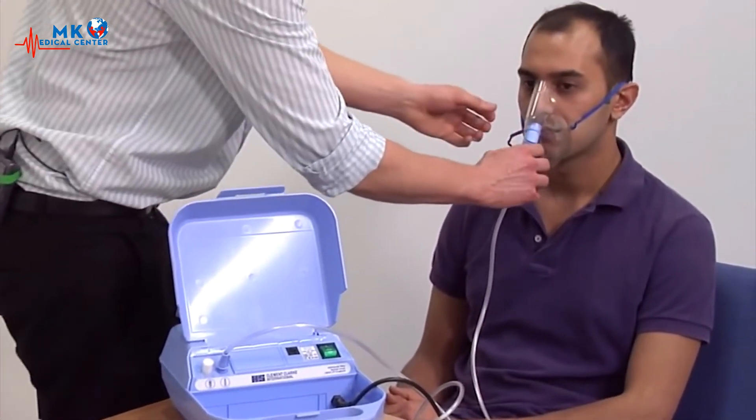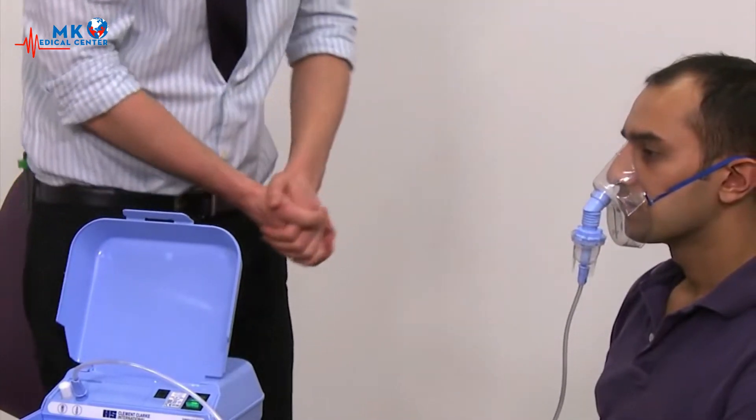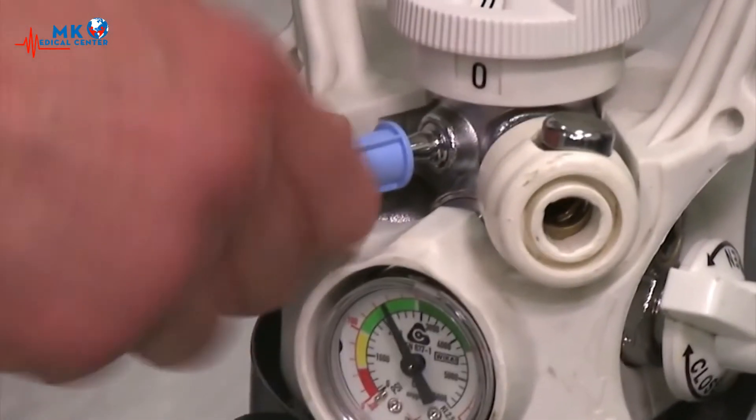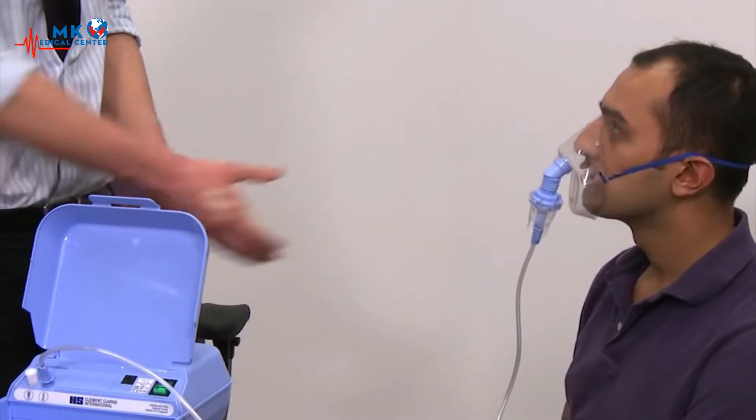If the patient requires oxygen therapy, the nebuliser chamber and mask can be directly connected to the oxygen outlet for simultaneous delivery of oxygen and nebulised medication. The oxygen flow rate should be between 6 and 8 litres a minute.